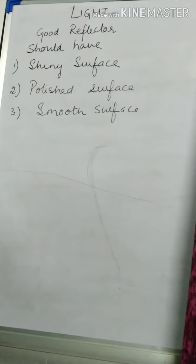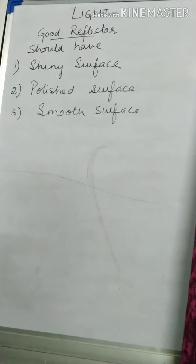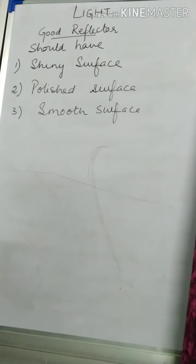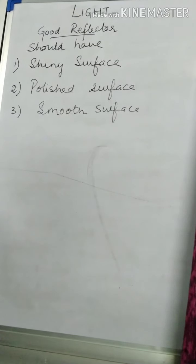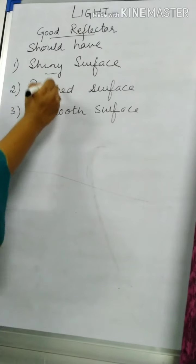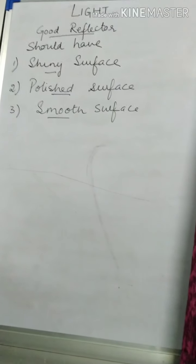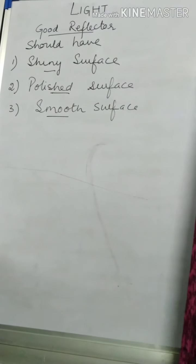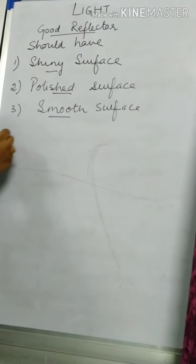For any surface to be a good reflector, it should have certain characteristics. A surface to be a good reflector should be a shiny surface, secondly it should be polished, and thirdly it should be a smooth surface. So a good reflector is the one which has a shiny, polished and smooth surface. Satisfying all these is a mirror.